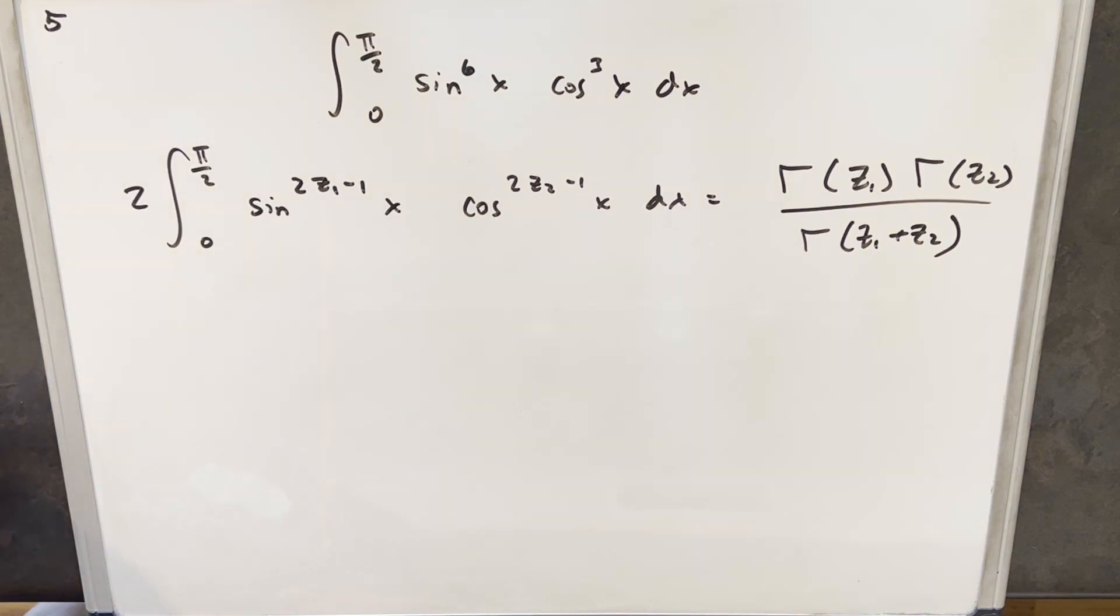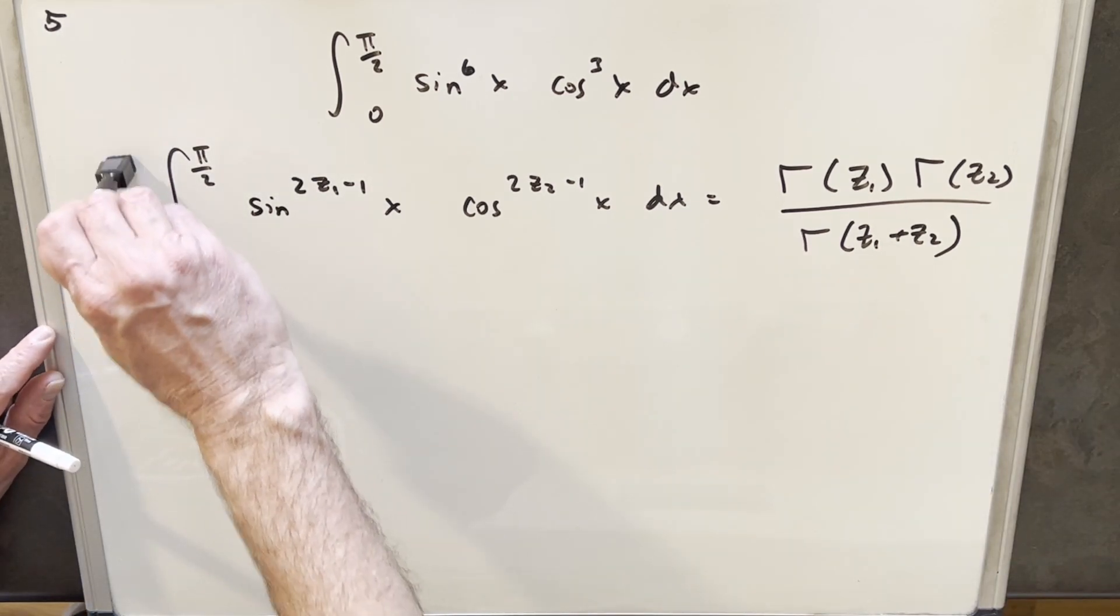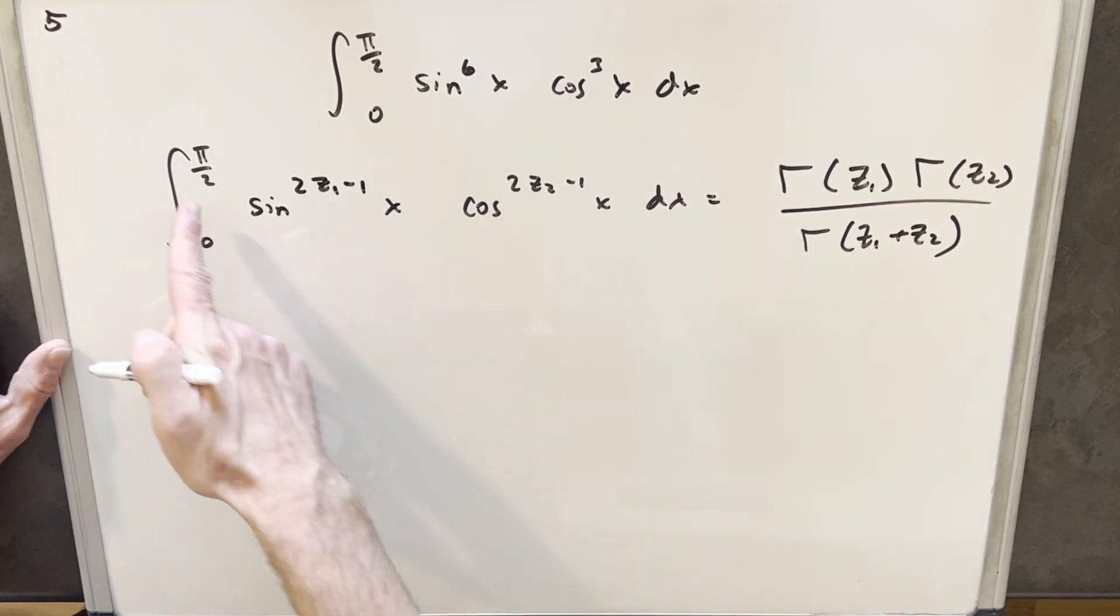But anyway, we're going to do it this way and use this formula. First, what I'm going to do is change it a little bit because I don't want that 2 in front, but I can just divide by 2 on both sides.